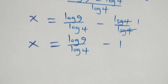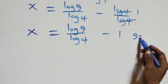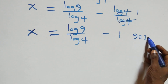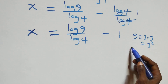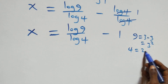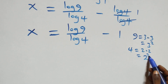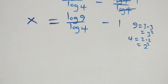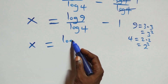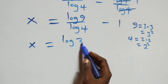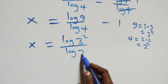From what we have here, 9 can be written as 3 times 3, which is 3 squared, and 4 can be written as 2 times 2, which is 2 squared. So what we have becomes x equals log(3 squared) over log(2 squared) minus 1.